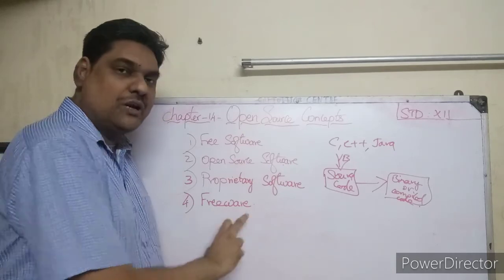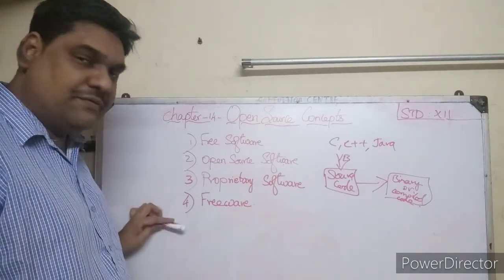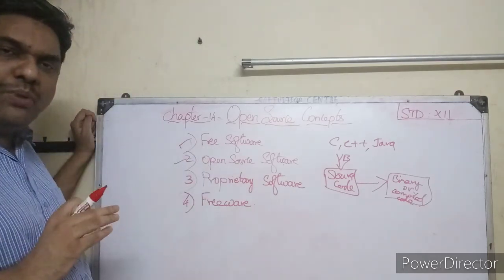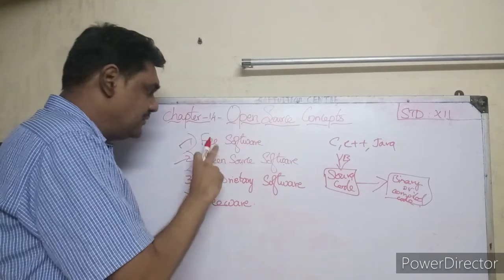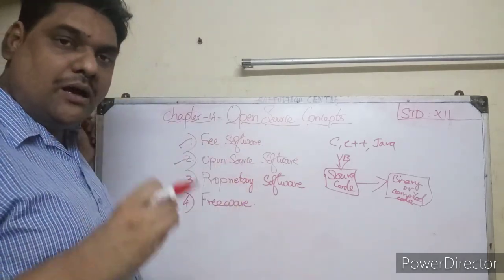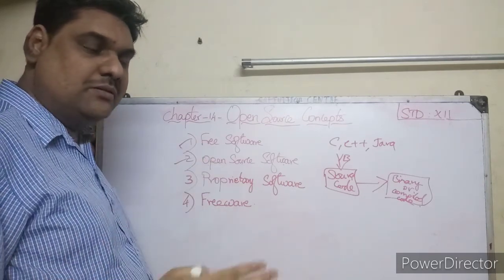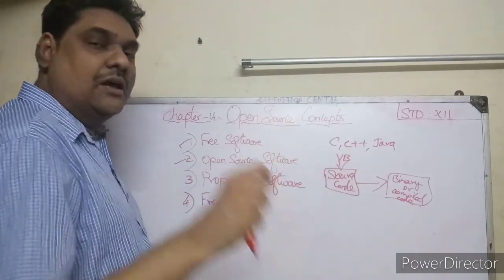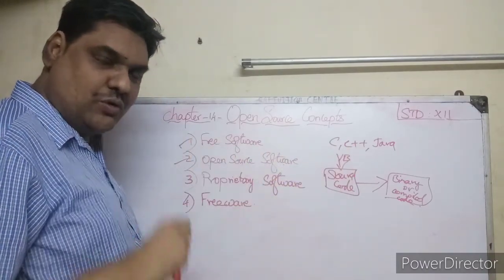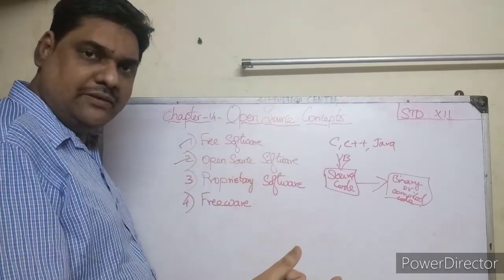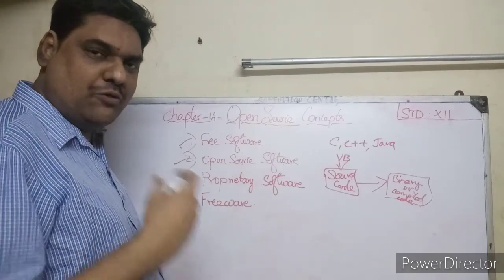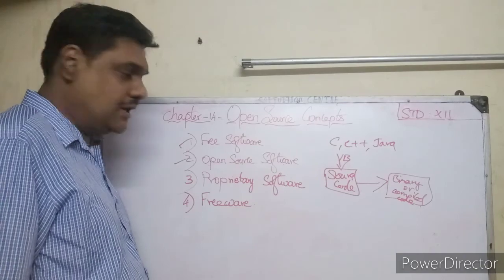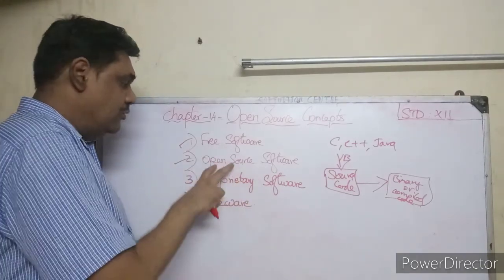The difference between free software and open source software: In the olden days, people created software in high-level languages and gave the source code freely to users — that is free software. But if you want to do modifications, that concept leads to open source software.